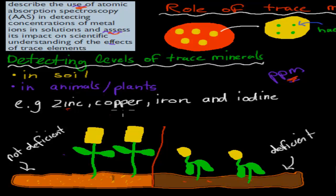For example, zinc, copper, iron, and iodine - these are examples of trace minerals which are often in different parts of the Earth, in soil, but only very small amounts. I'll just kind of put it into two or three different categories. The first part is it allows us to detect levels of trace minerals in soil, for example, and in animals or plants.